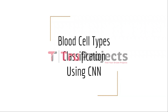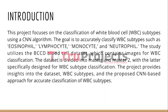In this video we are going to explain a project titled Blood Cell Types Classification Using CNN. The project centers around using a CNN algorithm to classify different types of white blood cells. The research utilizes the BCCD blood cell dataset, which consists of images for WBC classification. The dataset is divided into two parts — Master and Master 2 — with the latter specifically tailored for WBC subtype classification.